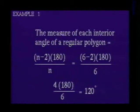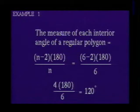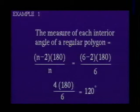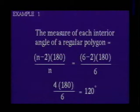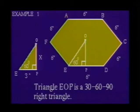We can calculate the measure of each interior angle using the formula that the measure of each interior angle of a regular polygon is equal to the number of sides minus two, times 180, all divided by the number of sides. Substitute six — the number of sides of the hexagon — for N and solve. We find that each interior angle measures 120 degrees. Because this is a regular hexagon, line segment OE will bisect angle FED.